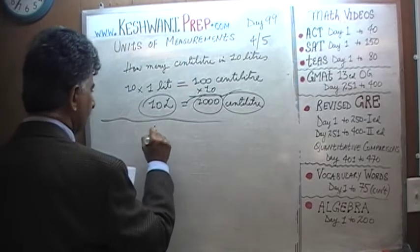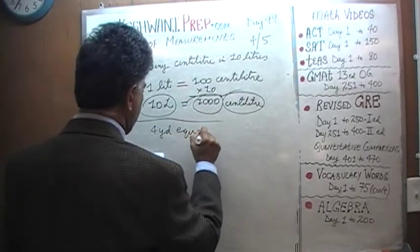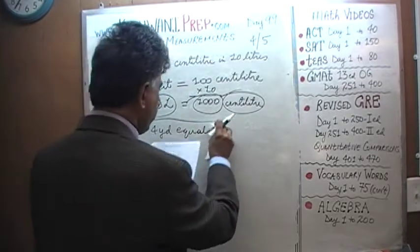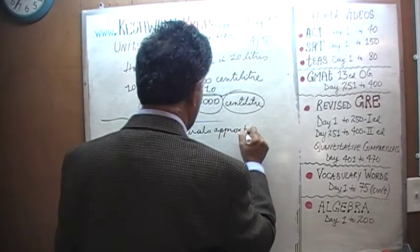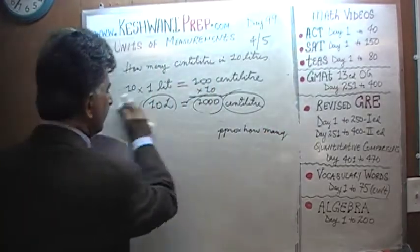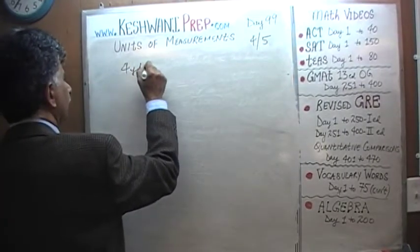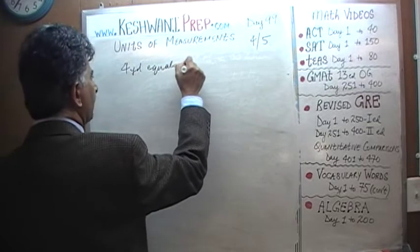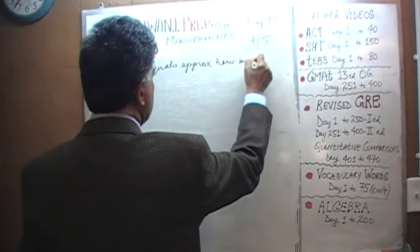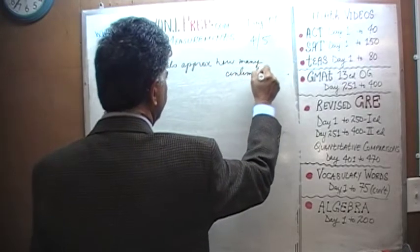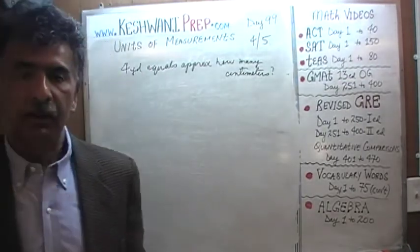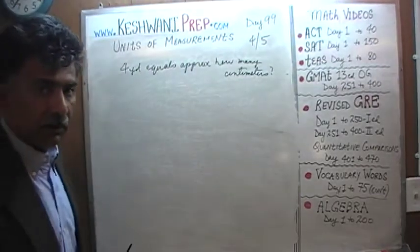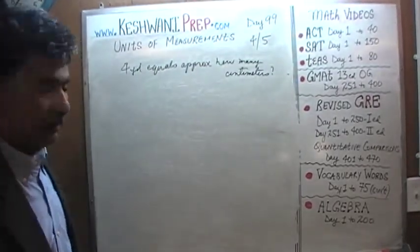Let's do the next one. Four yards equals approximately how many centimeters? We are going to keep it very simple — we are not looking for precision. We learned on day number 96 the basic conversion rates.